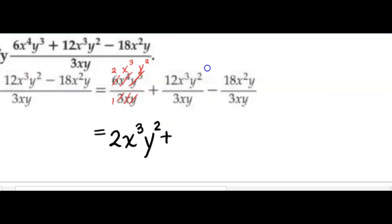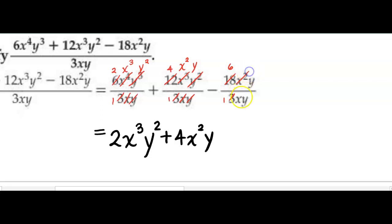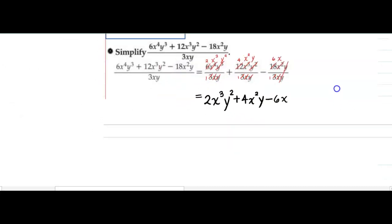We're going to do the same thing with the second term. 12 and 3 can cancel. I have x cubed over x, which cancels to give me x squared. I have y squared over y, which cancels just to leave me with y. So 4x squared y. And finally, 18 and 3 cancel. x squared cancels with x to leave just x in the numerator, and the y's cancel. So I have negative 6x. That's my final answer.